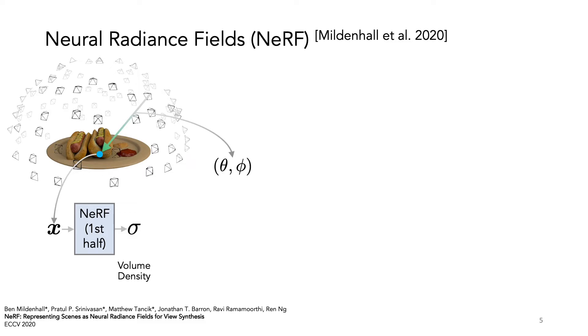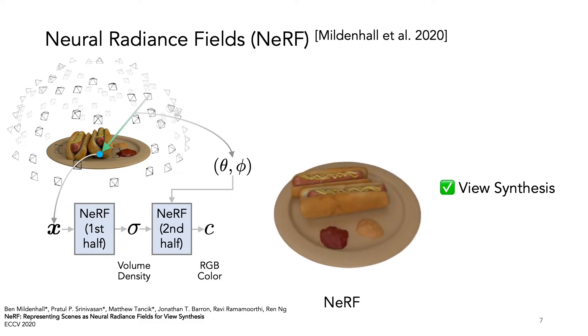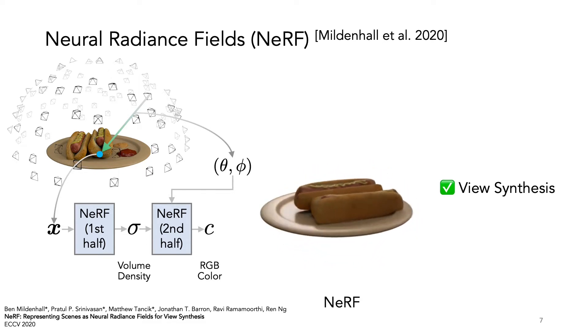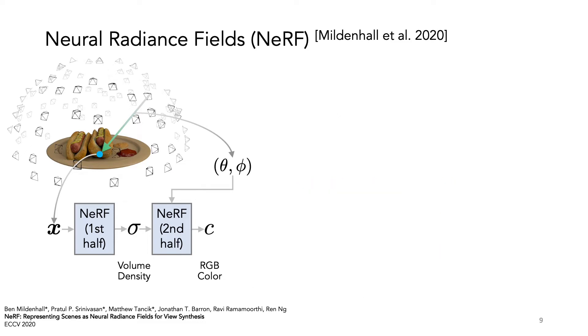With the viewing direction, the second part of NeRF gives us the RGB color C. So NeRF is able to synthesize novel views of the scene, however it's unable to do relighting or material editing because reflectance and illumination are entangled in C.